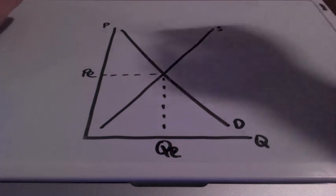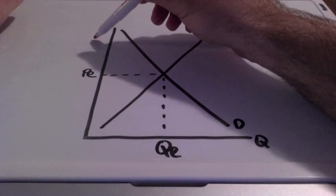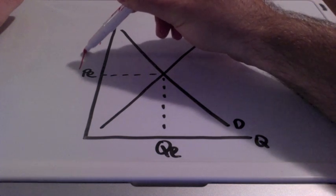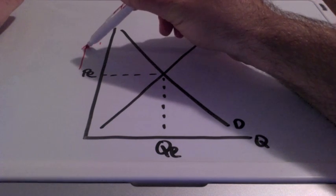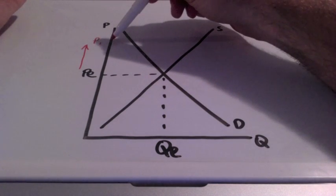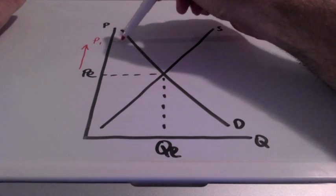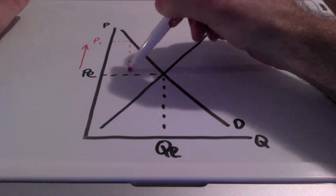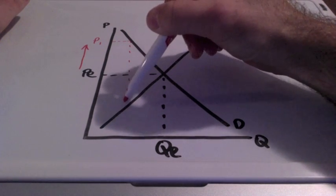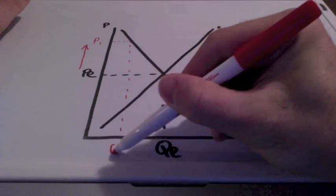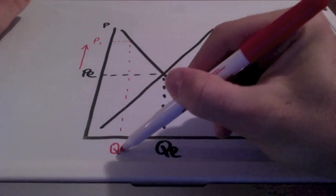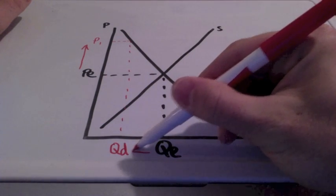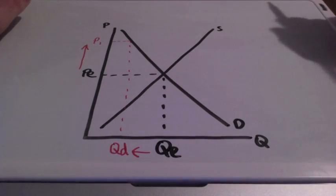So let's say, for example, if prices increase from our equilibrium price up to here. Well, let's take a look. Look at where the price is hitting the demand curve. As you know, when prices go up, quantity demanded will decrease.